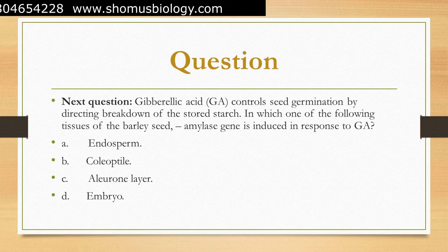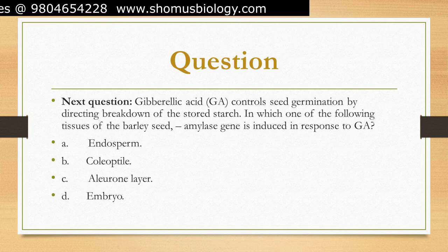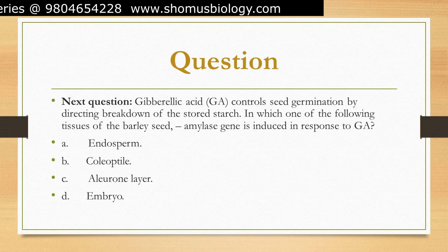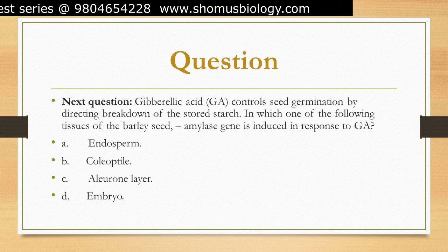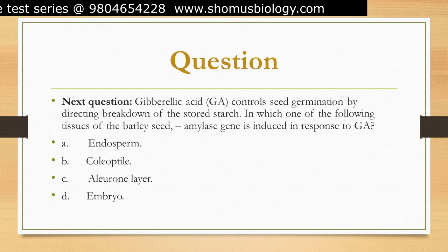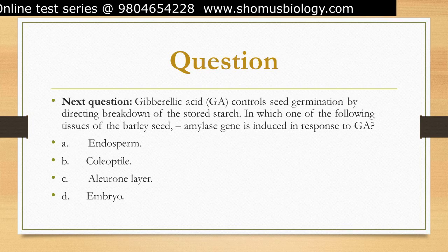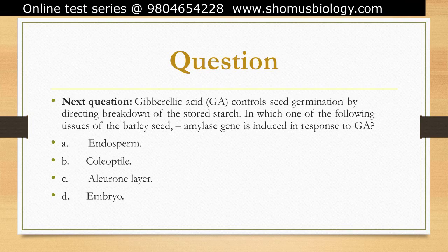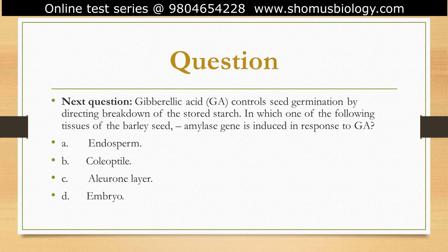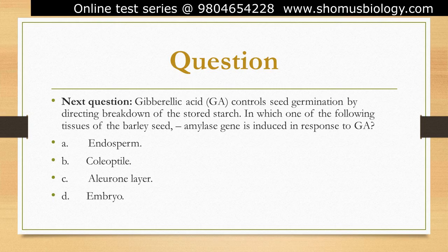During seed germination, GA promotes the breakdown of stored starch in the endosperm to provide nutrients for the developing embryo. The aleurone layer, which is a single layer of cells between the endosperm and the embryo, plays a critical role in this process. In response to GA, the aleurone cells synthesize and secrete alpha-amylase, an enzyme that catalyzes the hydrolysis of starch into glucose and maltose.